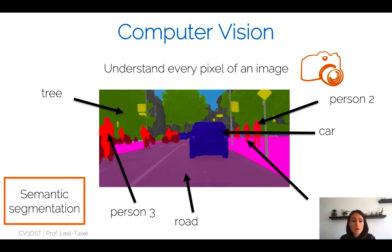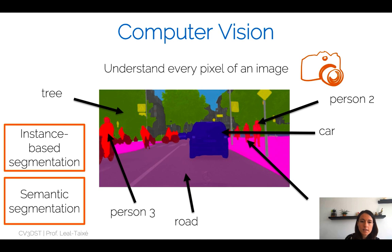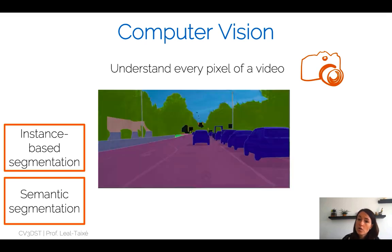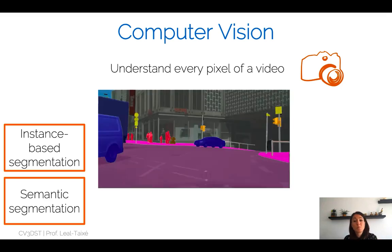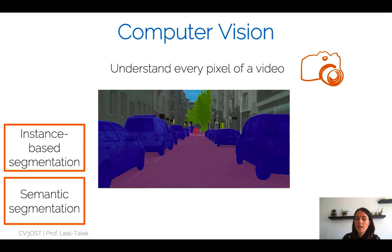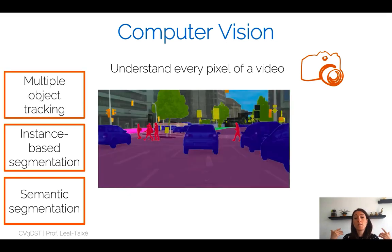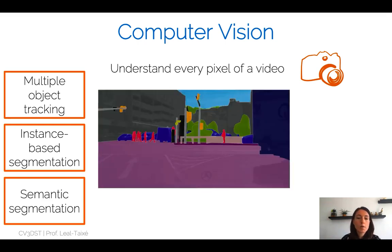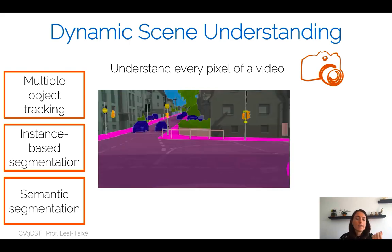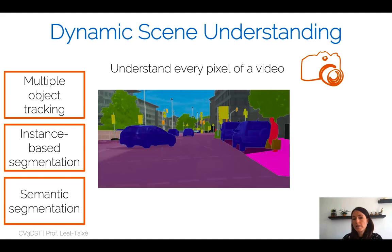For certain categories like cars or person, it might not be enough to say all of these pixels belong to the class 'person' — we actually want to identify the different instances of this class. This is the task called instance-based segmentation, which we will also cover. And of course, the world is not static. We don't really want to understand every pixel of an image, but every pixel of a video. Hence, we also want to solve the problem of multiple object tracking — detecting objects, understanding where they are, and following them over time.